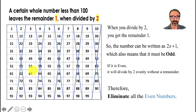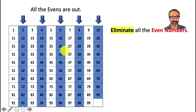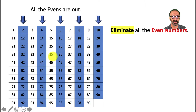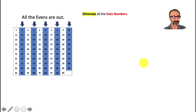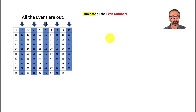All even numbers are out of my list, so from now on I'm only considering odd numbers. We're eliminating all the even numbers. The ones remaining for me are those with the white background — the blue background ones and the white background ones are still in consideration. We'll go further and use the other conditions one by one.